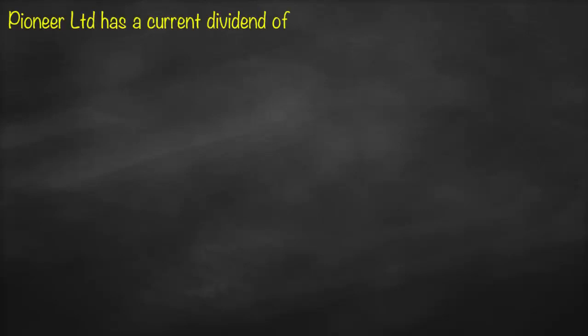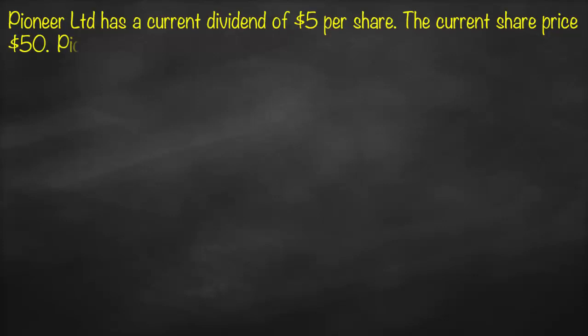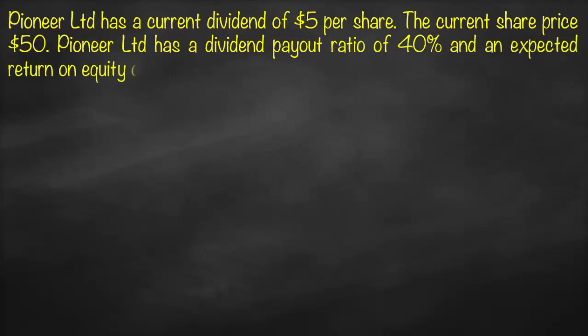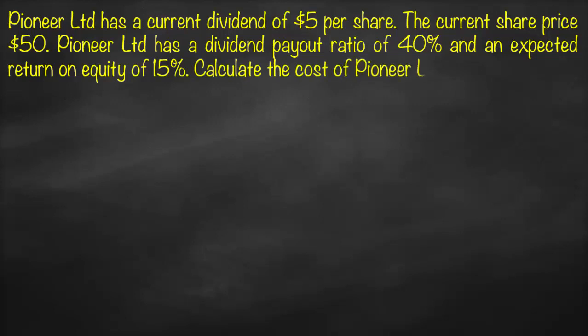This is an example about the dividend discount model. Pioneer Limited has a current dividend of $5 per share, a current share price of $50, a dividend payout ratio of 40%, and an expected return on equity of 15%. We need to calculate the cost of Pioneer Limited's common equity.